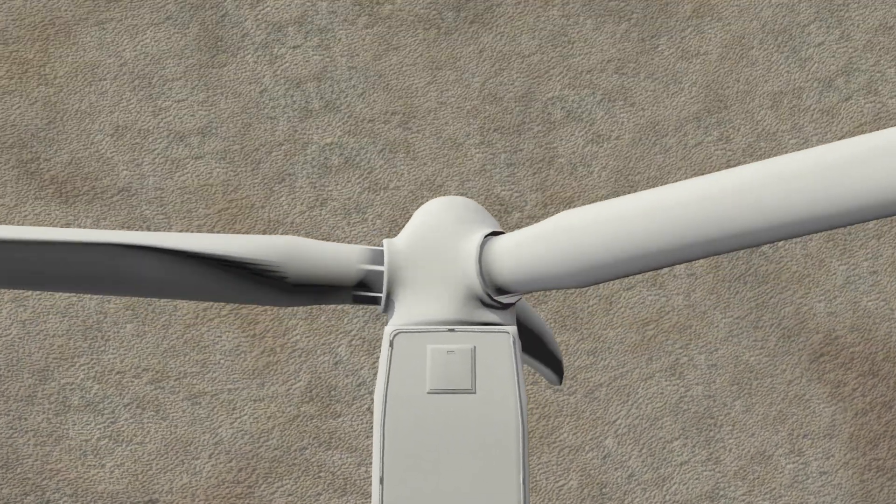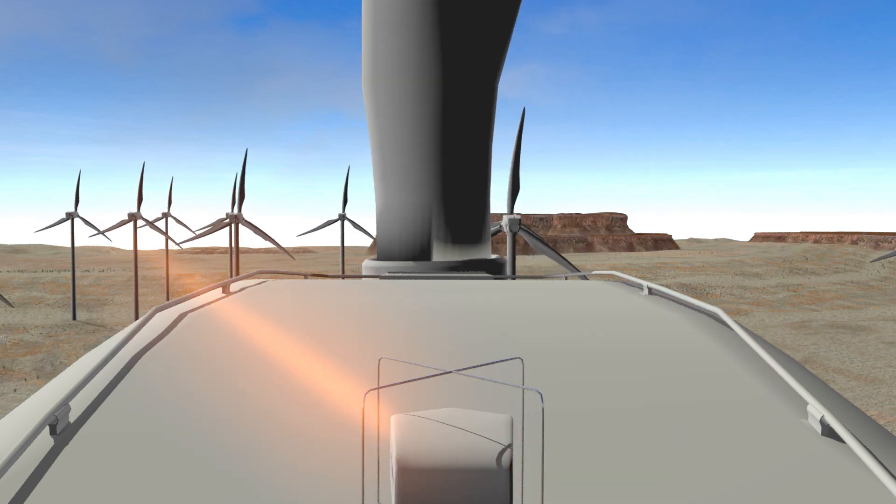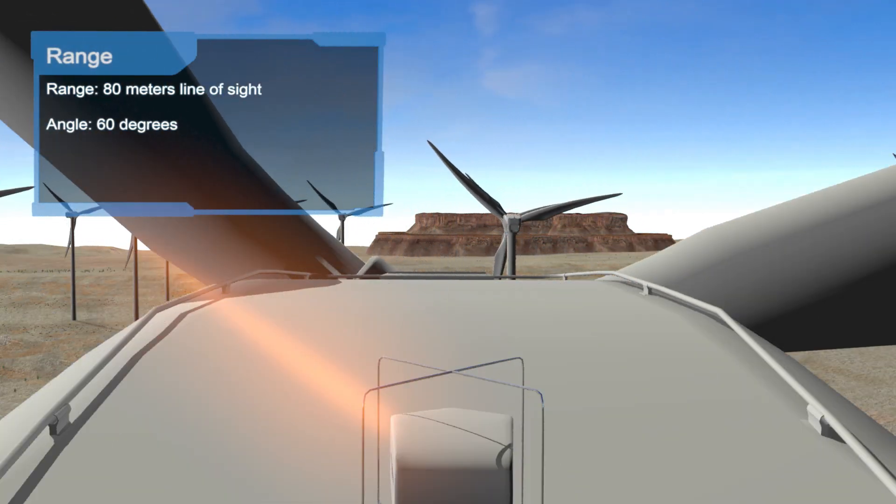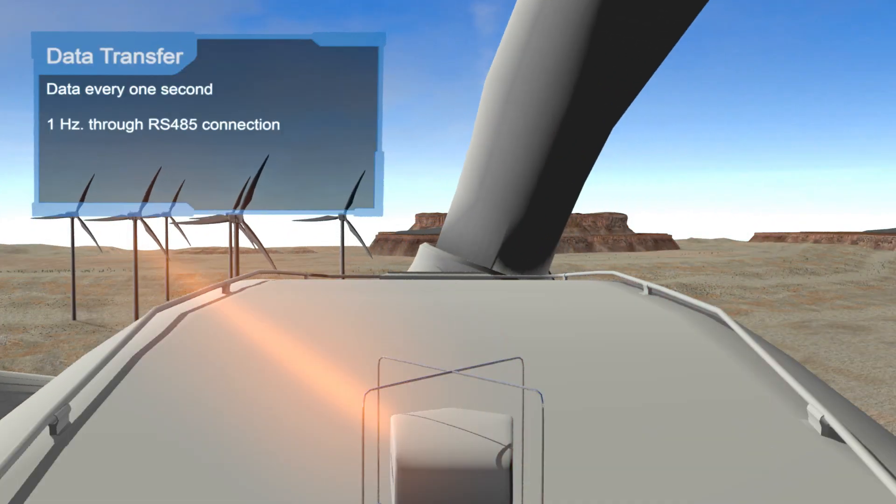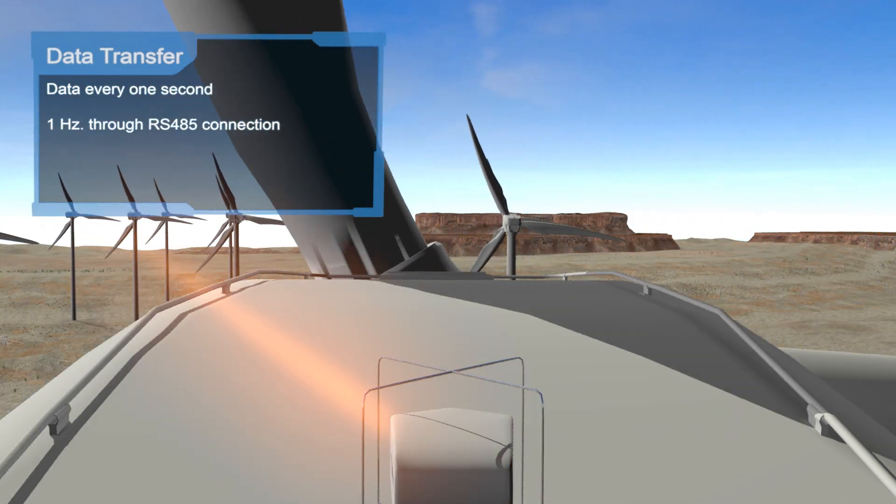The lidar emits two laser beams horizontally at a range of 80 meters ahead of the turbine in an angle of 60 degrees. The light emitted by the sensors measures the movements of tiny particles in the air and transmits the measured data to the wind turbine controller every second.